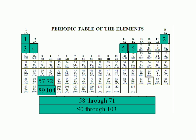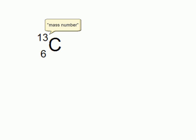Here's a more complete way of representing the carbon-13 atom. In addition to the mass number, the atomic number is written as a subscript to the left of the symbol. In a way, this is redundant, since we know that for any atom to be called carbon, it must have six protons.